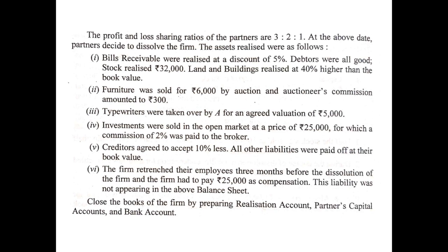Point four: investments were sold in the open market at 25,000 for which a commission of 2% was paid to the broker. This can be treated like the furniture case. We realized 25,000 but had to pay 2% commission. 2% of 25,000 is 500. So the net amount realized from investment is 24,500. This will be shown on the credit side of the realization account: by bank (investment realized) 24,500.